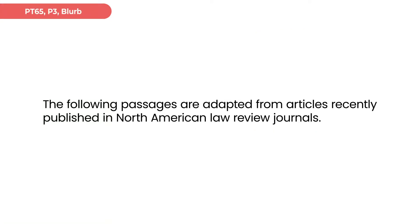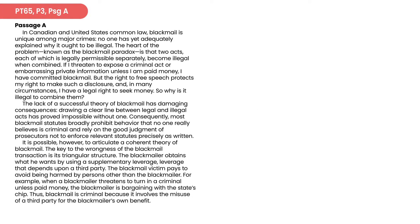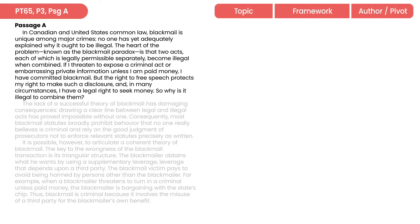These two passages start with a blurb, which is pretty uncommon. It doesn't seem to be telling us anything important — it's just saying both of these articles are from law review journals. Go ahead and pause the video if you want to read passage A. Welcome back. When we're breaking down a first paragraph, we're trying to think: what is the topic? What framework would make sense to organize my big picture ideas? And do I see the author's voice? Do I see any pivot language? The topic is usually revealed in the first sentence, so take your time.